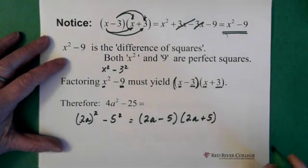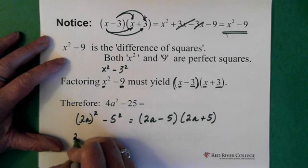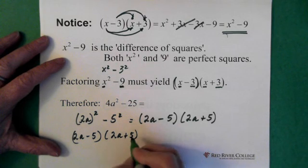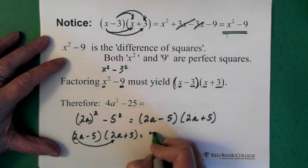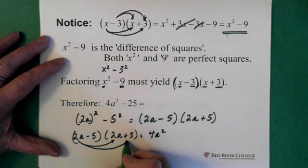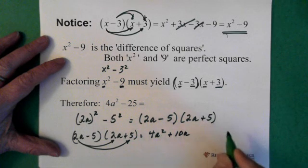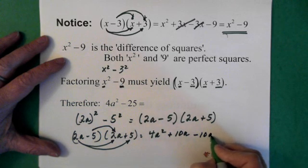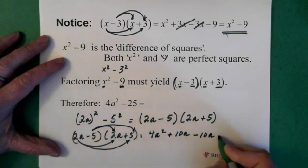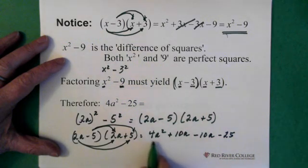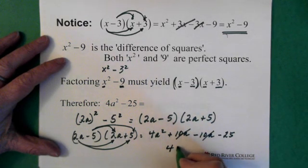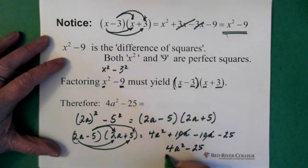Now if you're thinking, well, I'm not really sure about that, let's walk through this and see if it actually works. So 2a minus 5 times 2a plus 5: 2a times 2a gives us 4a squared. 2a times 5 gives us plus 10a. Minus 5 times 2a gives us minus 10a. And minus 5 times 5 gives us minus 25. So we have 4a squared; the 10a and minus 10a cancel, and we're left with 4a squared minus 25.